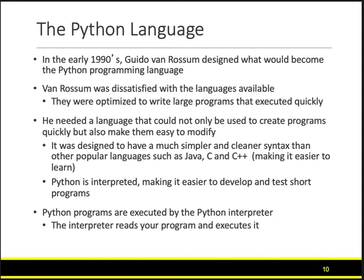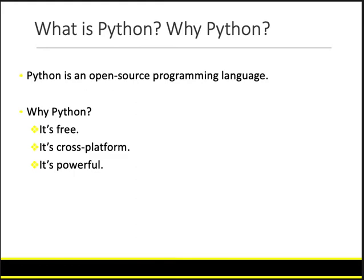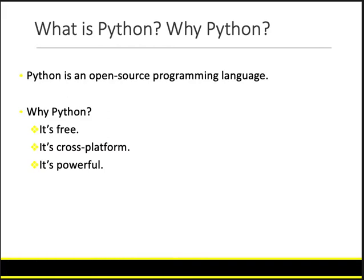The next series of slides talk about the Python language — what it is, why we need it. You can read the advantages of Python from the slide. But why is Python so popular? One, it's very fast, it's powerful, it's cross-platform, meaning that the code you write on a Mac can be run on Windows and vice versa, and you can run the same code in Linux as well. Hence, it's cross-platform.